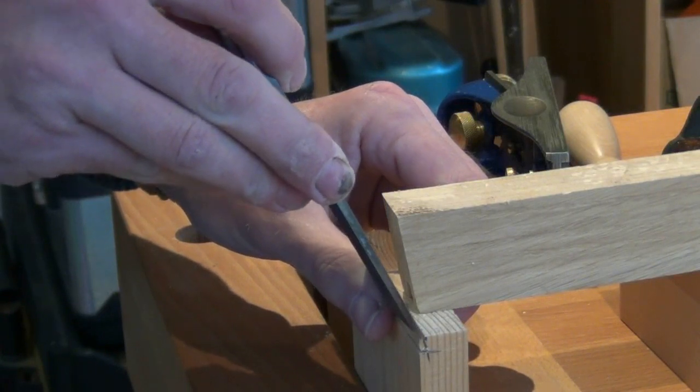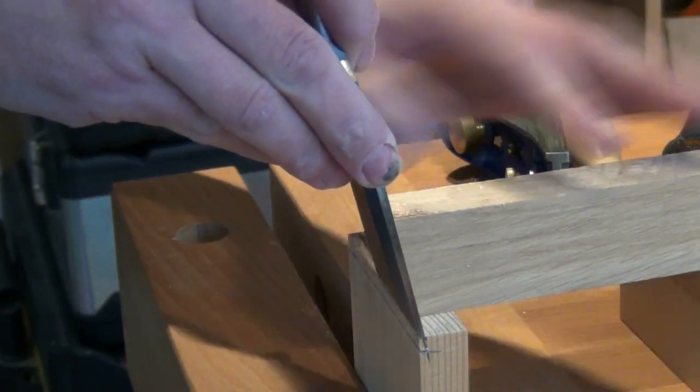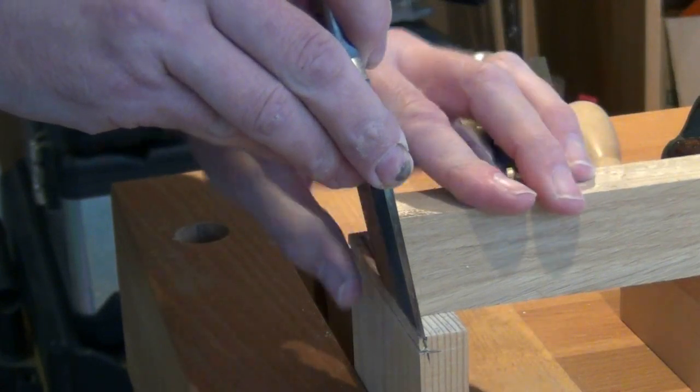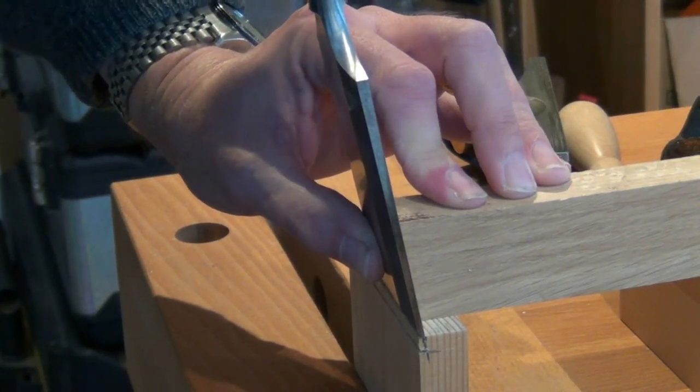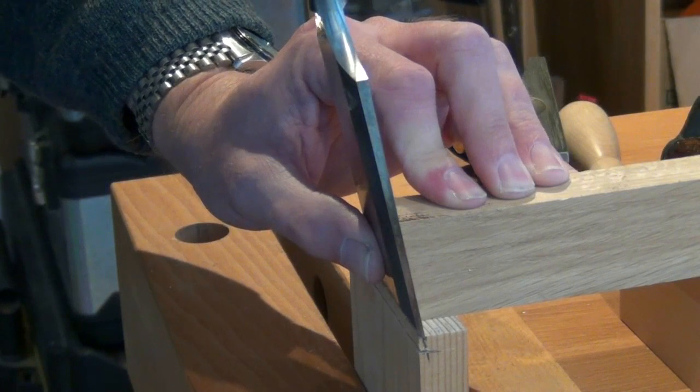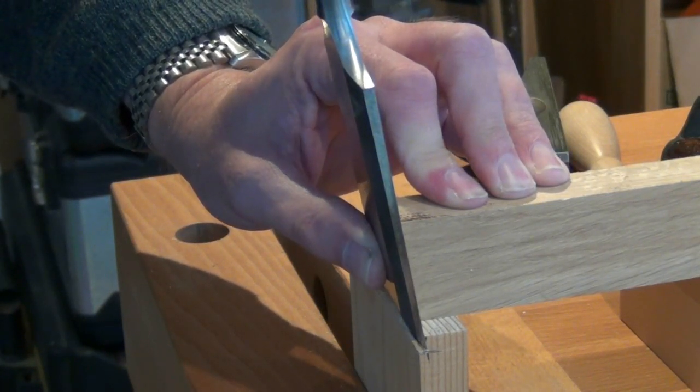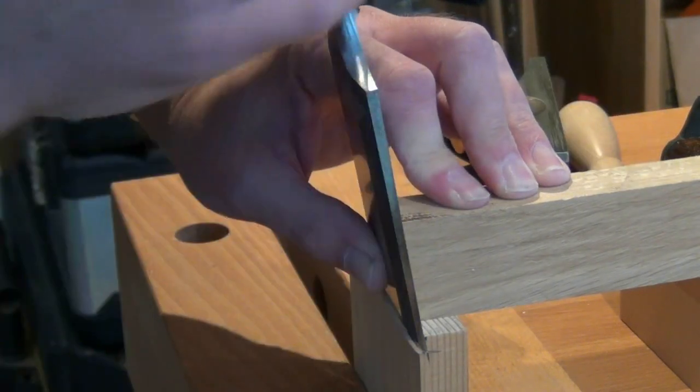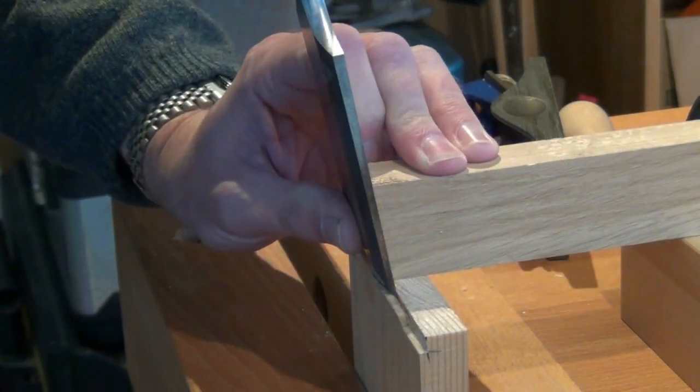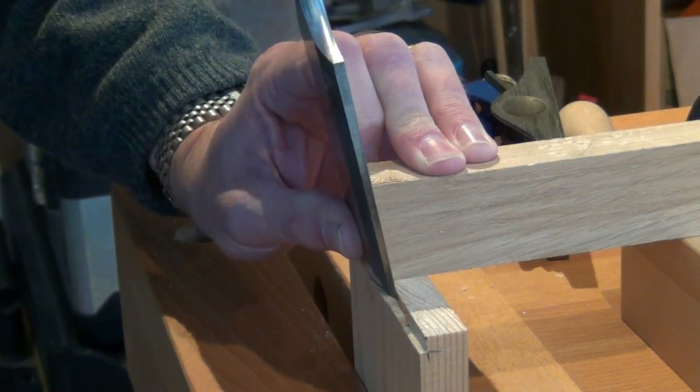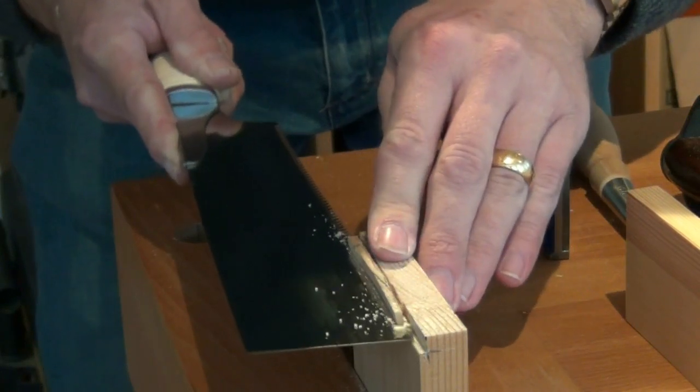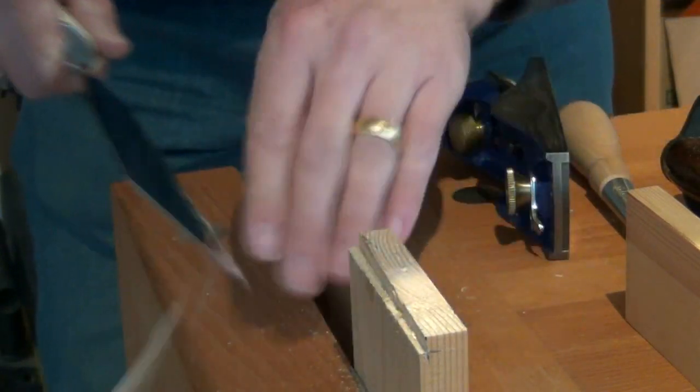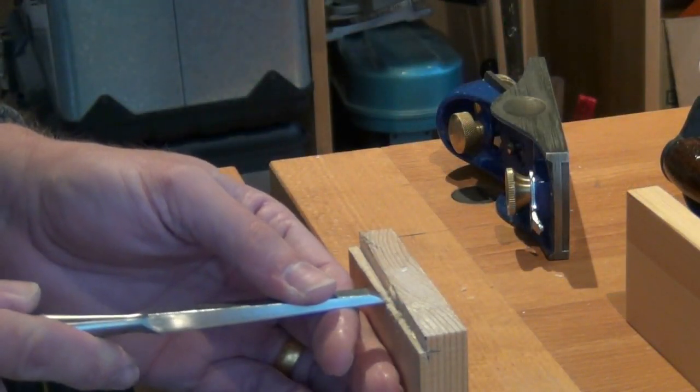Place the chisel into the knife line, raise it up so the back is flat against the angled block, and chop the dovetail. Work carefully along the line. Tidy up the inside corner.